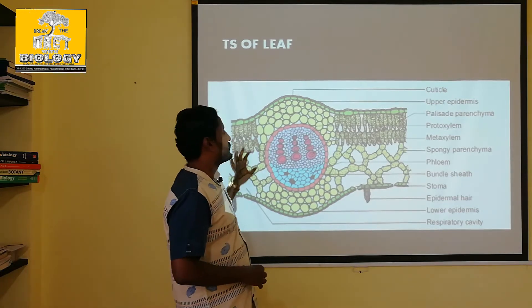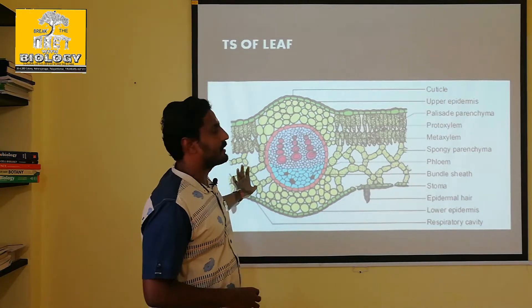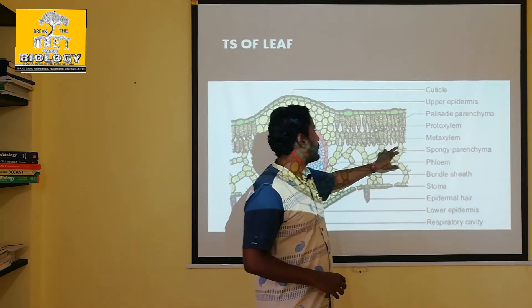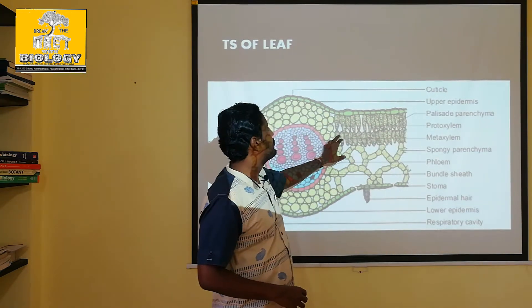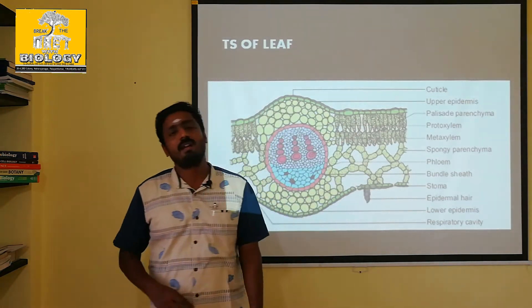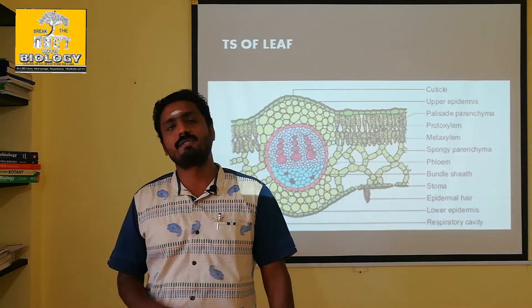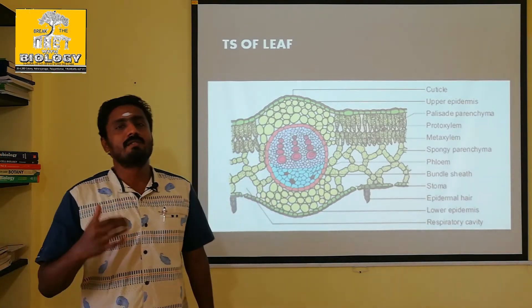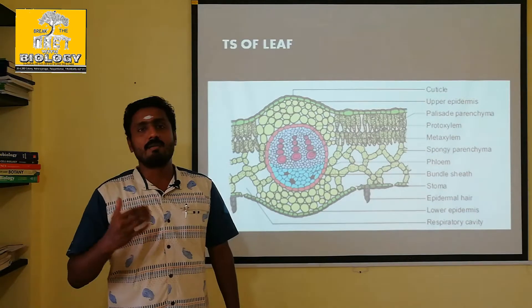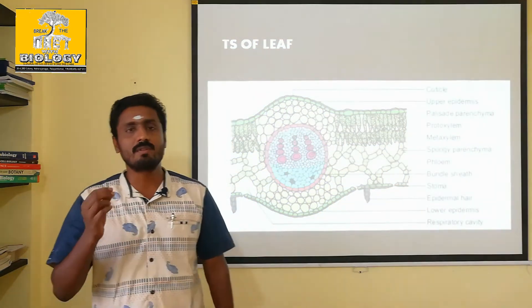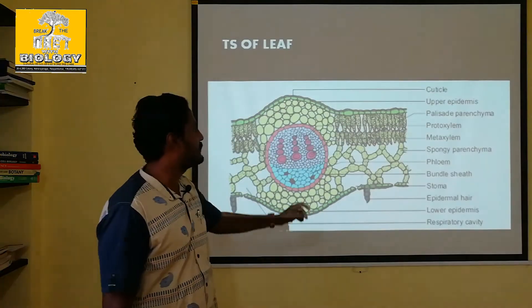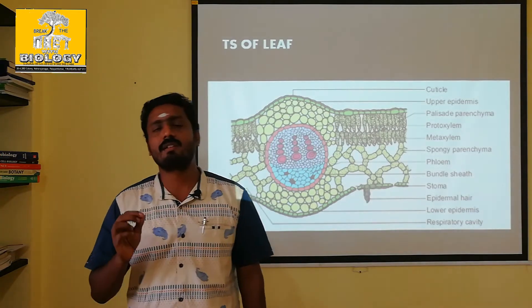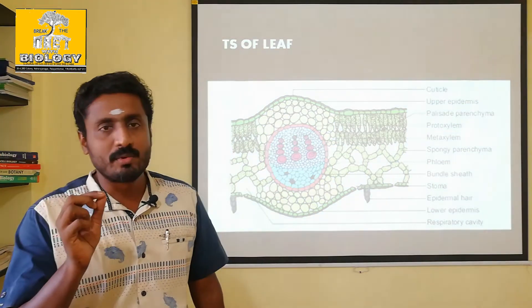In the vascular bundles we can analyze. Here is Palisade Parenchyma. In the Palisade Parenchyma, they are nearby the upper epidermis. In the upper epidermis there is Palisade Parenchyma. It is compactly arranged. If you look at the small structures, they are nothing but chloroplasts.